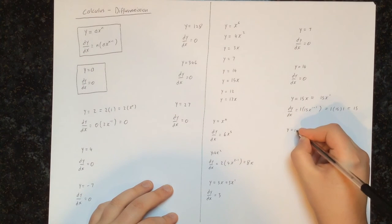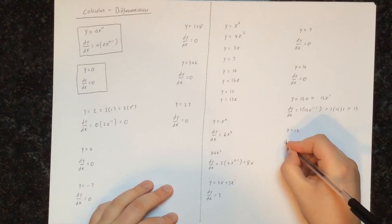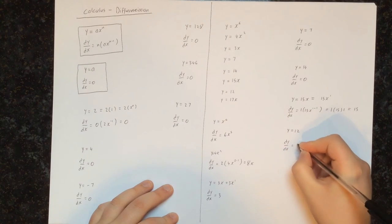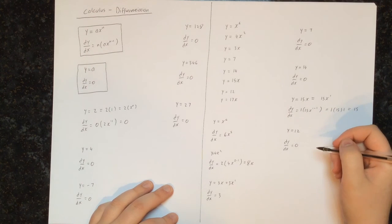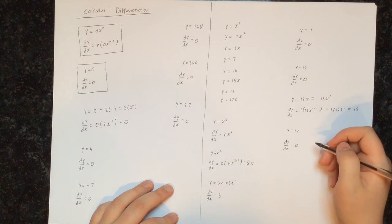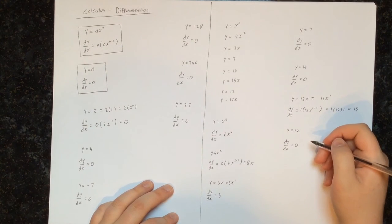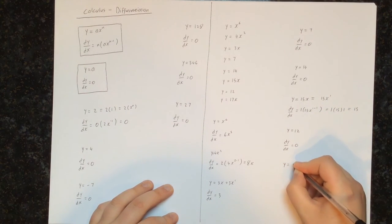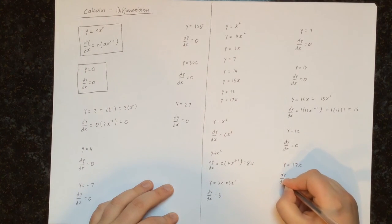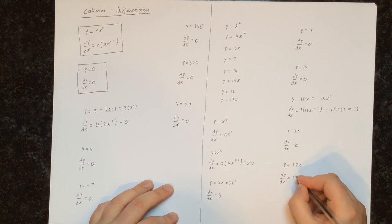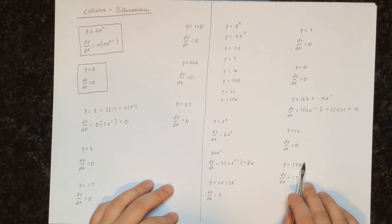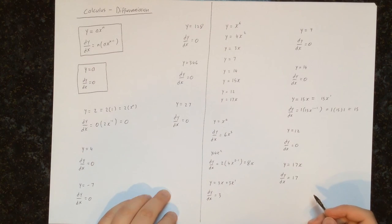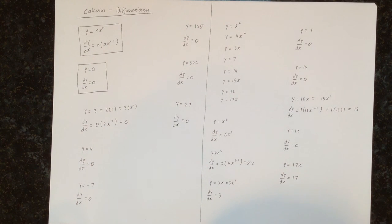Next, we have y equals 12, and 12 is just a constant, so the derivative is equal to 0. A constant means it's just a number — 12 is always equal to 12, so it is constant. Finally, y equals 17x, so dy/dx will be equal to 17, because if we have y equals some number times x, the derivative will just be that number. So now we know how to differentiate several simple functions. In the next video, we will look at more complicated functions that arise when we add simple functions together.